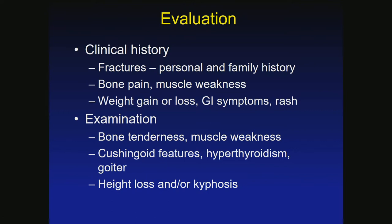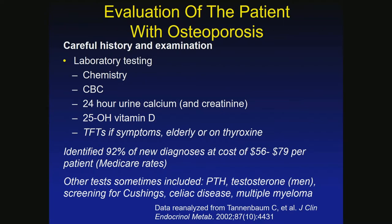On exam, do they have bone tenderness, muscle weakness? Do they look cushingoid or could they be hyperthyroid? Do they have a goiter? Have they lost height? Do they have kyphoscoliosis? The key tests from that original study are: chemistry panel, CBC, 24-hour urine, 25-hydroxyvitamin D, and thyroid function tests if the patient is older or on thyroxine.